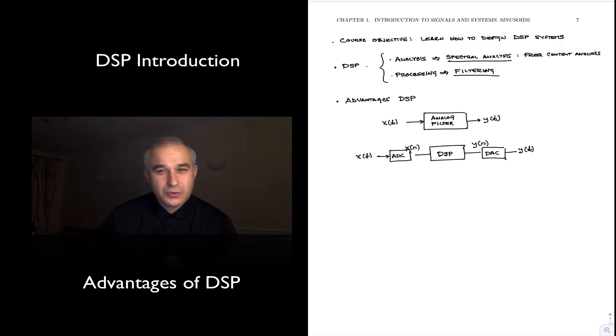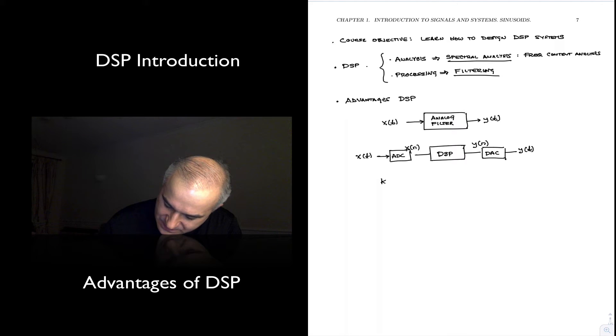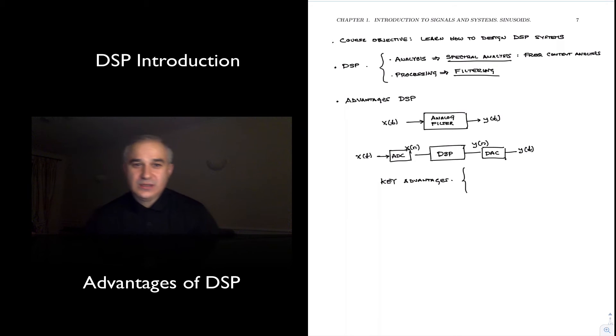And then we need to actually do the digital to analog conversion to get y of t. So as you can see, to do DSP we need to add a front-end analog to digital conversion and a back-end digital to analog conversion circuit. It appears more complicated. So again, what are the advantages, given that these are the building blocks that seem to have some complexity?